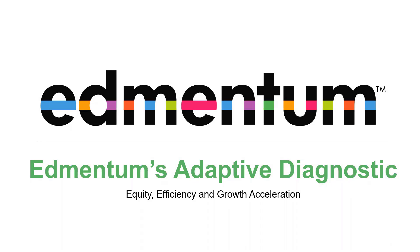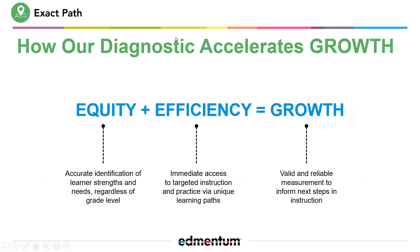Hello, and thank you for spending a few minutes watching this recording about Admentum's adaptive diagnostic. In this recording, we'll talk about how Admentum's adaptive diagnostic allows us to use equity and efficiency to really create growth within various student populations. We create that equity by accurately identifying learners regardless of their grade level or skill level. We bring efficiency by immediately giving educators access to targeted instruction based upon the data delivered through this adaptive diagnostic, and those two pieces together allow us to create growth in any student population and accurately identify and measure that growth.